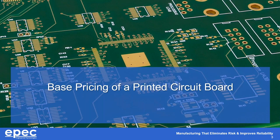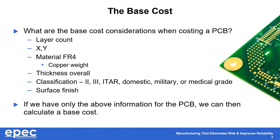Base pricing of all printed circuit boards — because they're built-to-print products, they're all unique. So how do we calculate the base cost? We look at the layer count, which is all copper electronic layers — we don't calculate solder mask or silk screen. The XY dimension is the longest length and width; if your PCB is not perfectly rectangular, we take the longest dimension in the two directions.